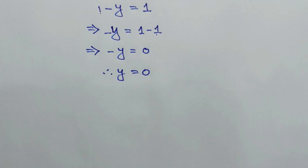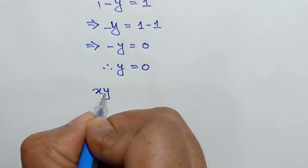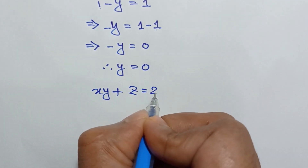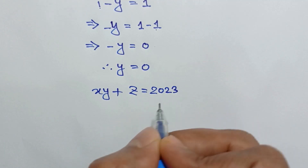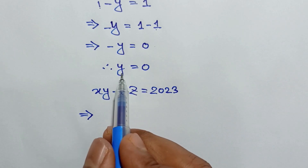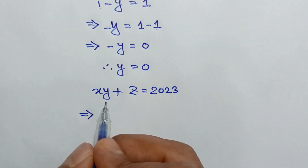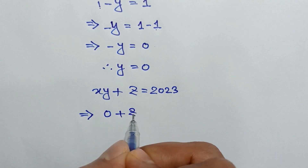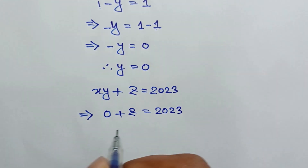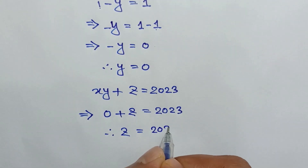From equation 1, we can write xy plus z equals 2023. Substituting y equals 0, x times 0 plus z equals 2023, so the value of z is equal to 2023.